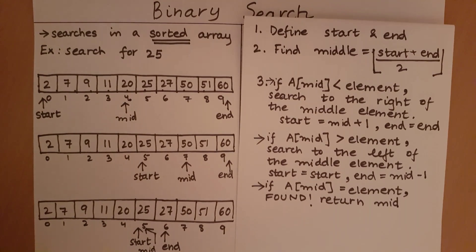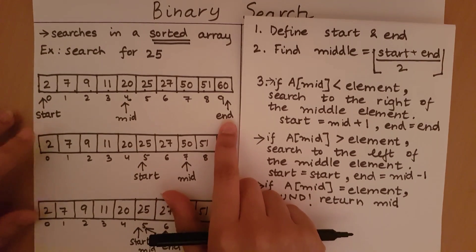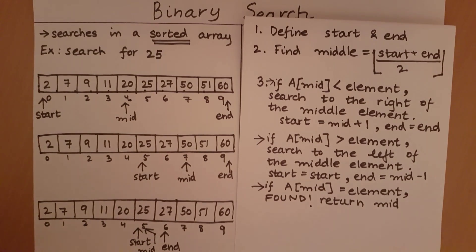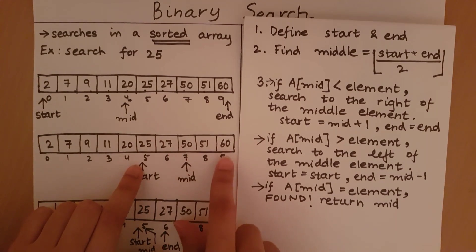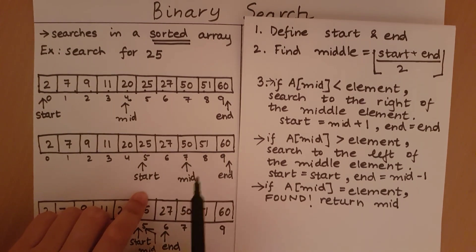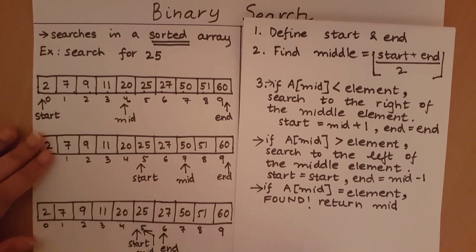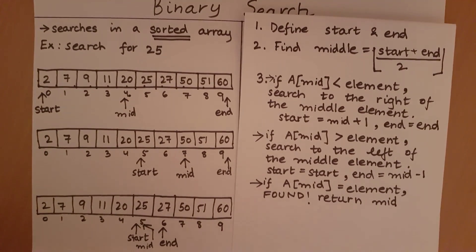It can also be the case that the element we are searching for is not present in the array. Let's take an example searching for 26. We start with start and end defined. The middle is index 4 with element 20. Since 26 is greater than 20, we search to the right. The new middle is index 7 with element 50. Since 26 is less than 50, we search to the left. Now start and end are 5 and 6; the middle is 5 with element 25. Since 26 is greater than 25, we must search to the right of the middle.